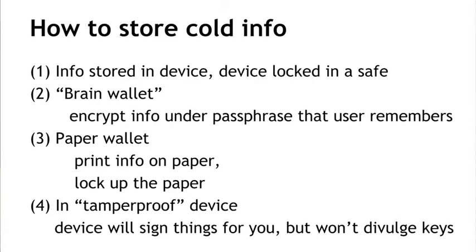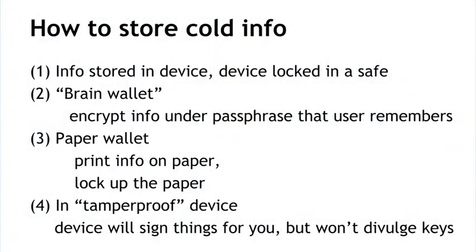The second method is called a brain wallet. We take the information we want to protect and encrypt it under a passphrase or password that a user remembers. To get the information back later, the user provides the passphrase and we decrypt. If the crypto is done correctly and the user picked a good passphrase, the security will be as good as the security of the passphrase. But this is subject to the same kinds of attacks that passwords typically are.